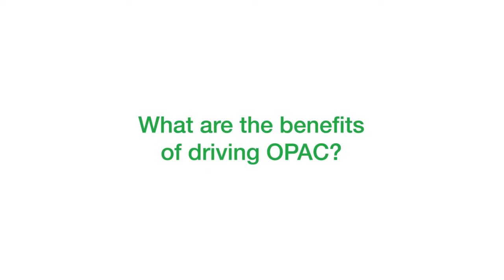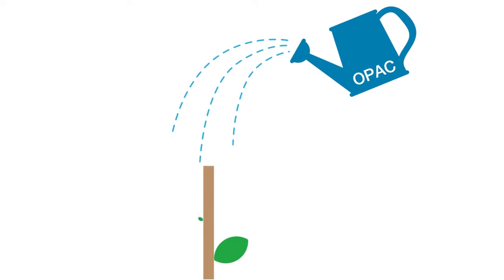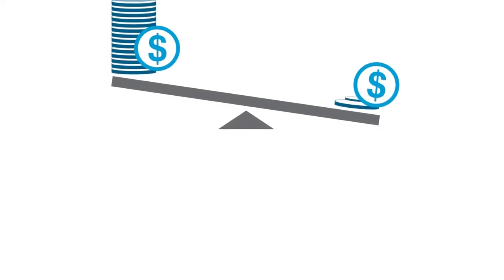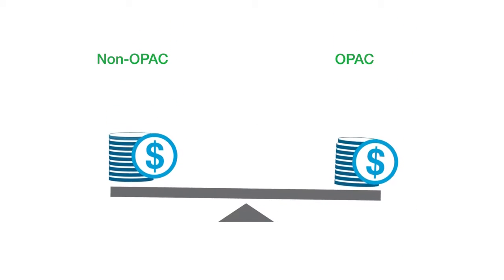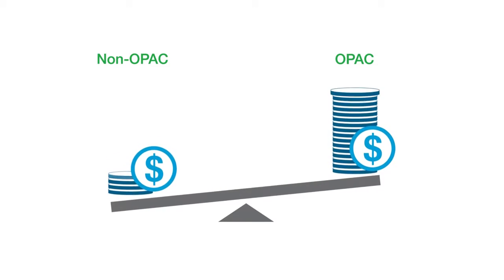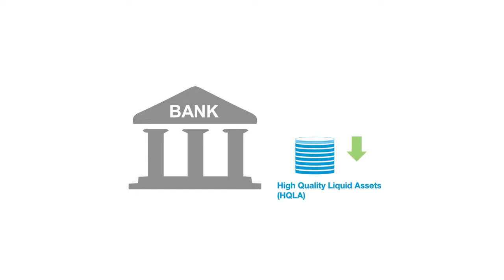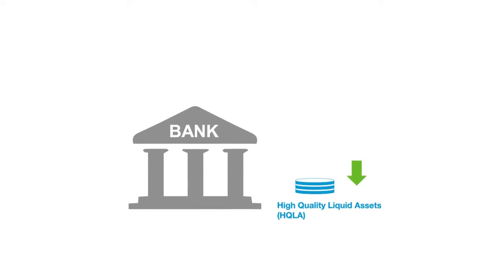So what are the benefits of driving OPEC? From the previous slide, OPEC has a lower LCR outflow, which allows more deposits to be deployed in high-yielding commercial assets. Next, as more balances convert to OPEC, the expected LCR outflow decreases. Last, this in turn reduces the amount of high-quality liquid assets the bank is required to hold, assuming we maintain the same LCR, eventually reducing cost of funds and improving returns.